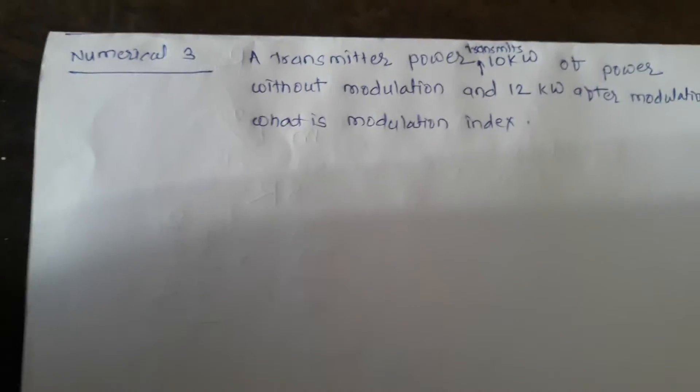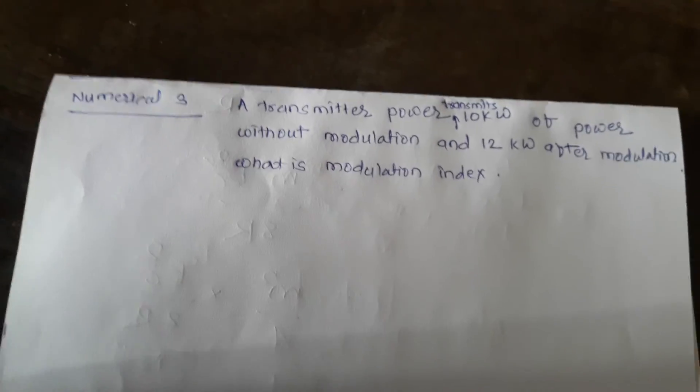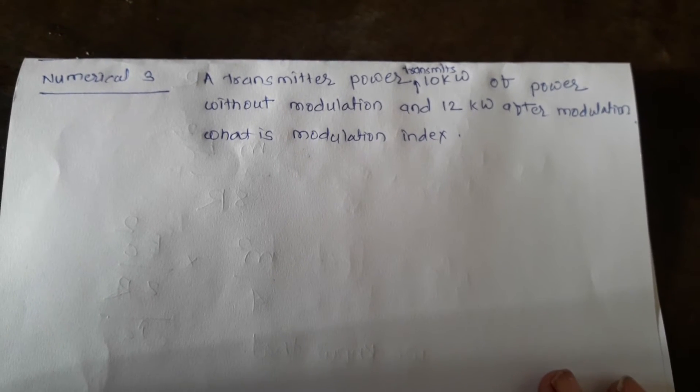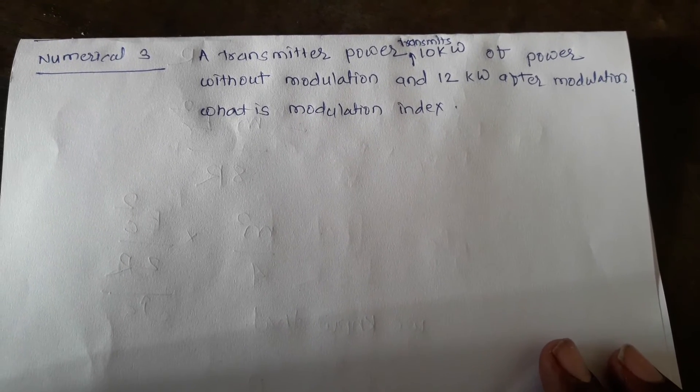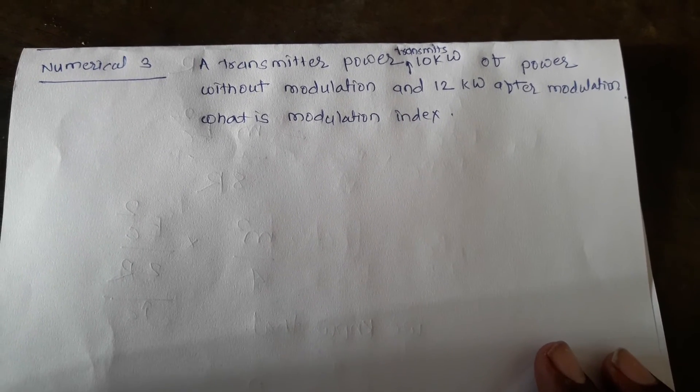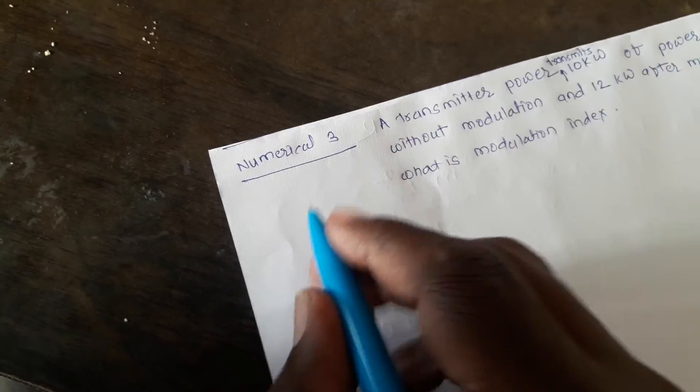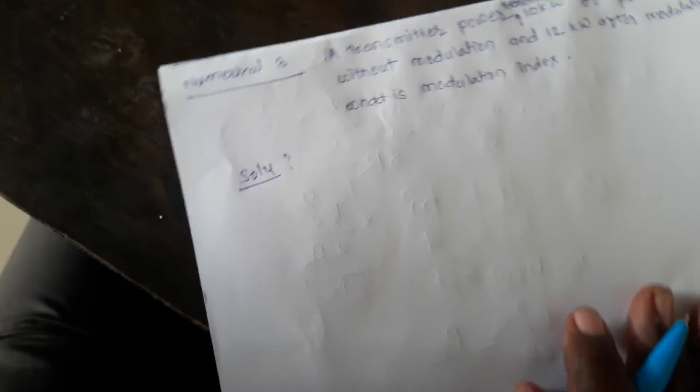So it is numerical 3. A transmitter transmits 10 kW of power without modulation, and after modulation the transmitter power is 12 kW. What is the modulation index? While solving such tricky numericals,